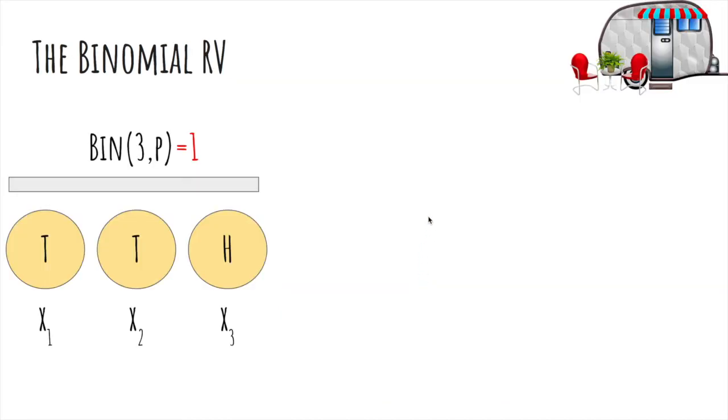Now let's talk about the binomial random variable. The binomial random variable has two parameters, n equals 3 and p. Here this is the number of heads in three flips of a coin, with probability of heads being p. You can see it's 1, because there's only one head.